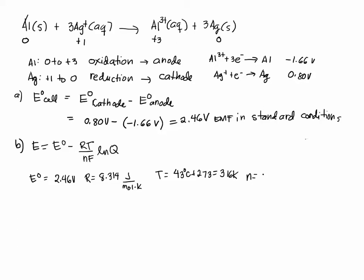And n is the number of electrons. That would be three, the number of electrons that goes from the anode to the cathode. This is the oxidation half reaction involves three electrons and the reduction involves one electron. So you have to multiply by three. So n is equal to three.